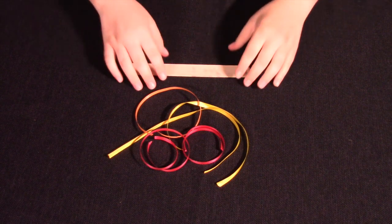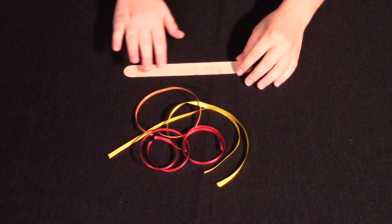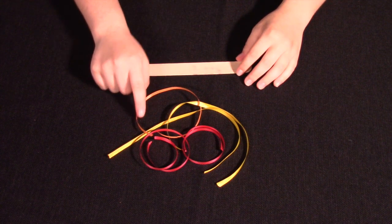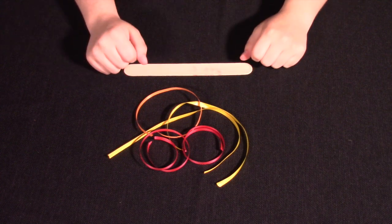Step 4. Using the edge of your extra-large popsicle stick, run the curling ribbon all the way down at an angle. This should add a curl to your ribbon.